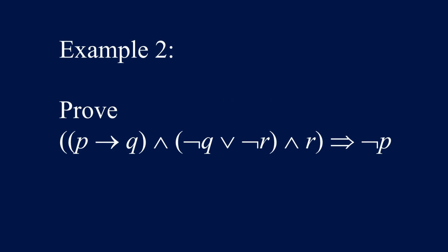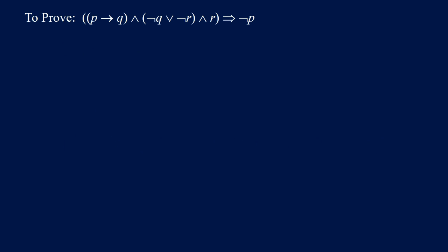Example two: prove that the following is a logical implication — ((P implies Q) and (not Q or not R) and R) implies not P. Our destination is what we are going to prove: an implication consisting of the premise on the left side and the conclusion on the right side. To get this we introduce a flag with the pole and put the premise in the flag, indicating this with 1.